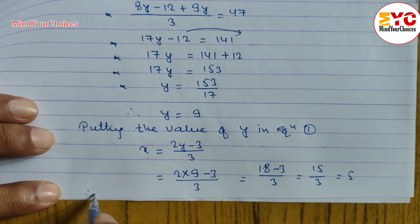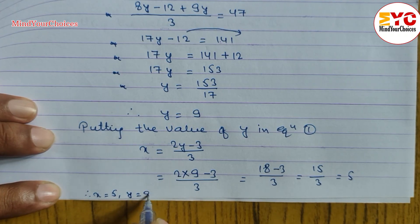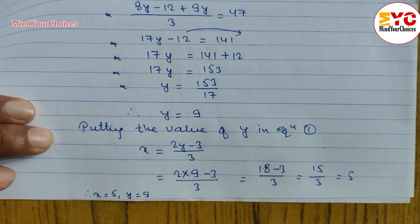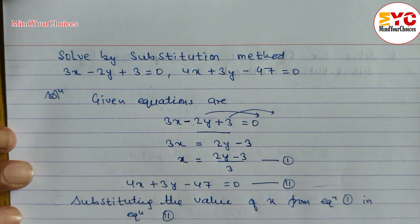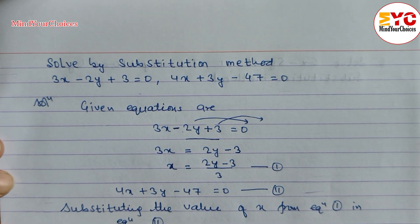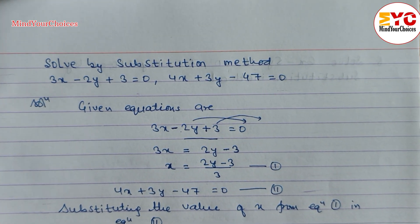Therefore, x is equal to 5 and y is equal to 9. That is your answer. Hope you understand how to solve a linear equation by substitution method. Please like, follow, and subscribe. Share with your friends too. Thanks for watching till the last. Keep supporting and keep sharing.